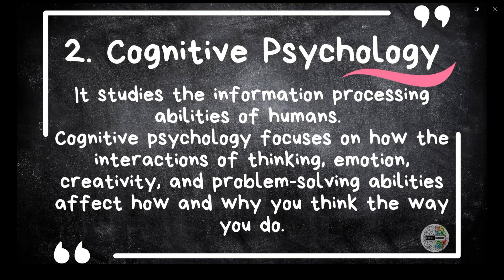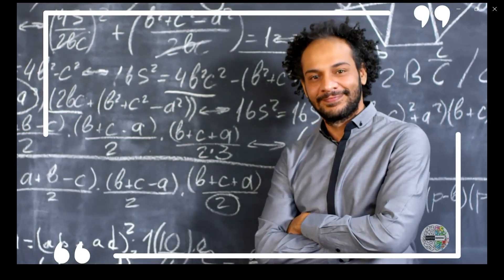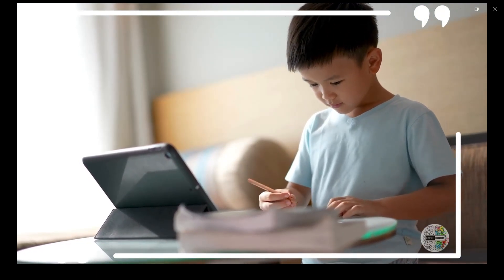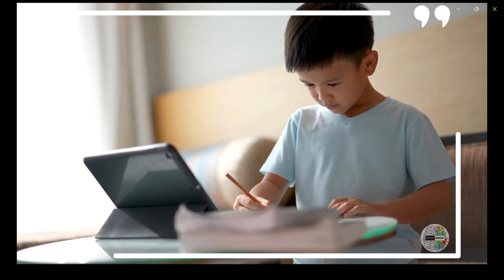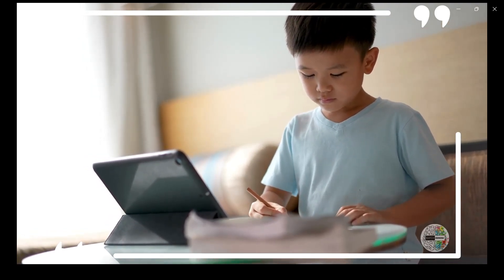Number 2: Cognitive psychology. It studies the information processing abilities of humans. Cognitive psychology focuses on how the interactions of thinking, emotion, creativity, and problem-solving abilities affect how and why you think the way you do. Examples of cognition include paying attention to something in the environment, learning something new, making decisions, processing language, sensing and perceiving environmental stimuli, solving problems, and using memory.